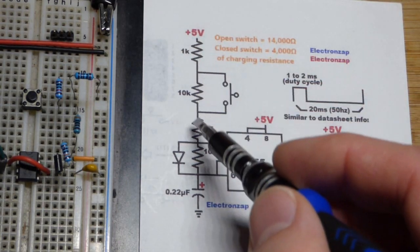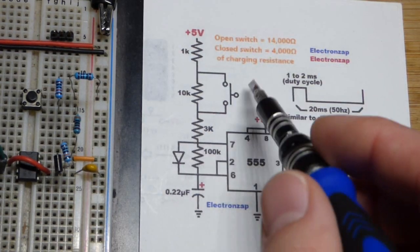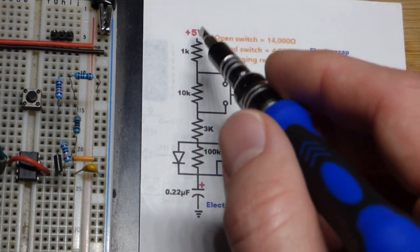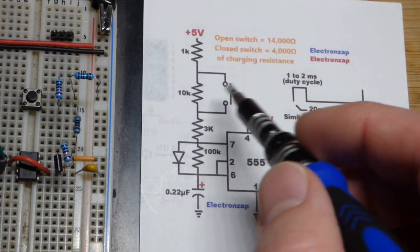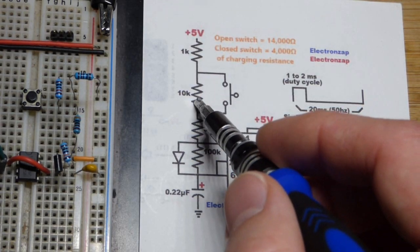You can see we have 14,000 ohms of resistance with this combination of resistors. But if I close the switch, we only have 4K of resistance. With the switch open, much longer pulse.